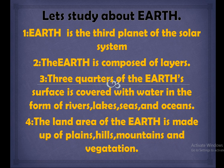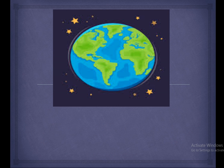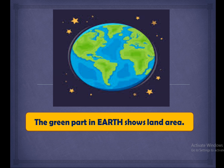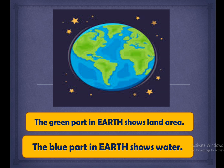The land area of the Earth is made up of plains, hills, mountains and vegetation. You all can see the picture of the Earth. Now, in the picture of the Earth, you can see the green part. The green part in Earth shows land area, while the blue part in Earth shows water.